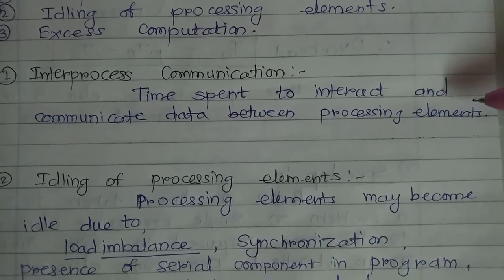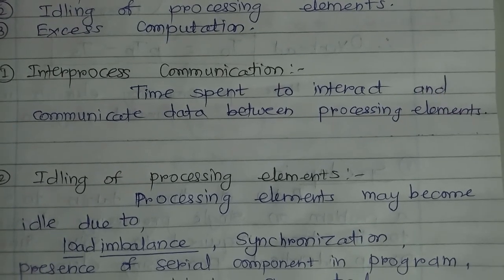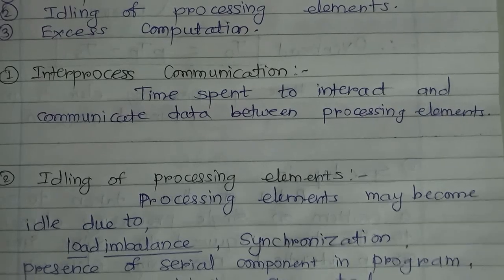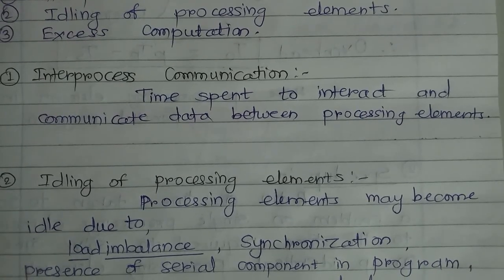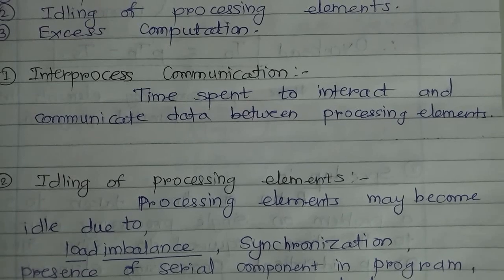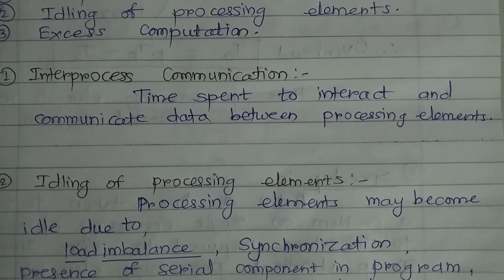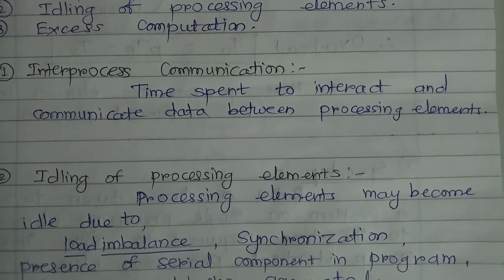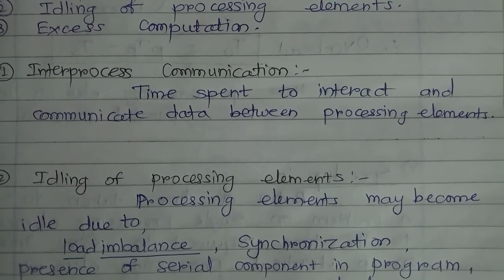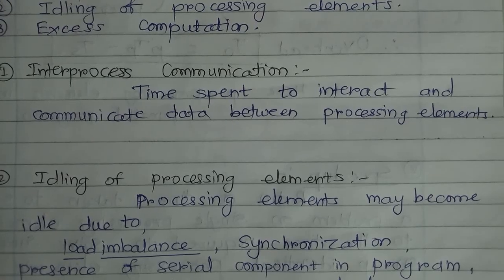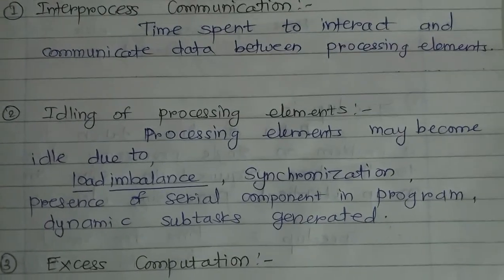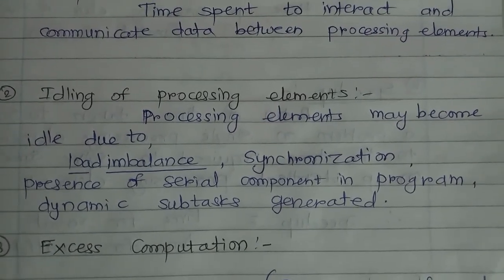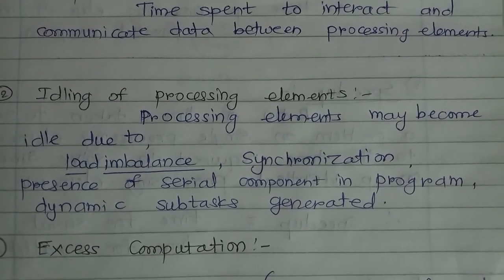Inter-process communication is the time spent to interact and communicate data between processing elements. If data dependency exists in the problem and multiple processing elements are working on the same data, they are dependent on each other, requiring inter-process communication. As a result, two processing elements — even if they are otherwise independent — cannot work in parallel, contributing to inter-process communication time.